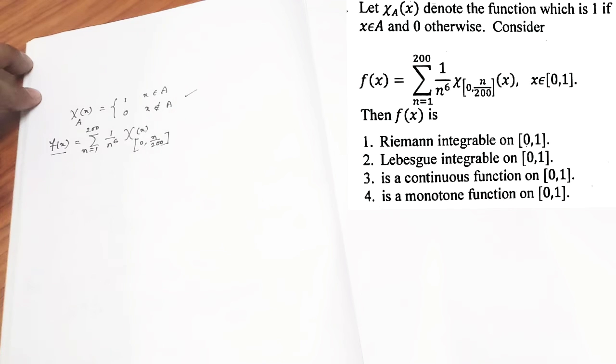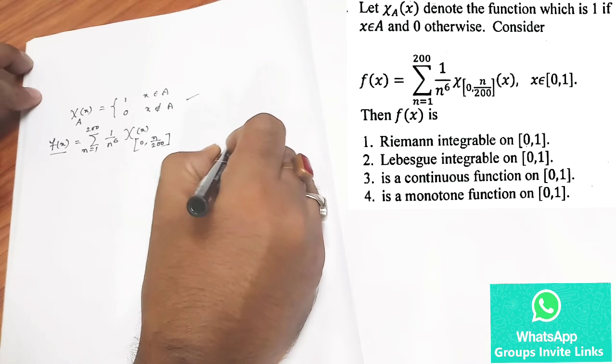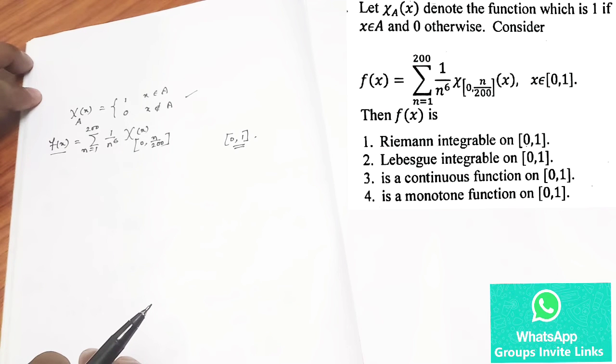All four options are related to this f(x). In the first option they are asking whether this one is Riemann integrable or not. Second, it is Lebesgue integrable or not. Third and fourth option respectively ask about the continuity and monotonicity of that function in the interval [0,1].